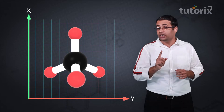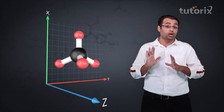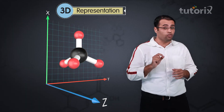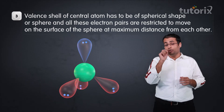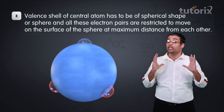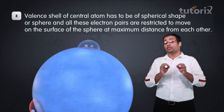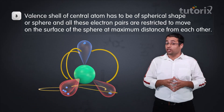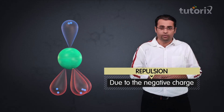But the world we live in has three dimensions and molecules actually exist in the real world. So the three-dimensional aspect of molecules is taken care of by the next assumption, which tells us that the valence shell of a central atom has to be of a spherical shape, and all electron pairs are restricted to move on the surface of this sphere at maximum distance from each other — because they repel each other due to negative charge.